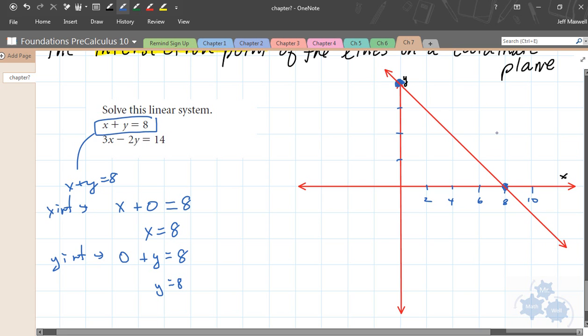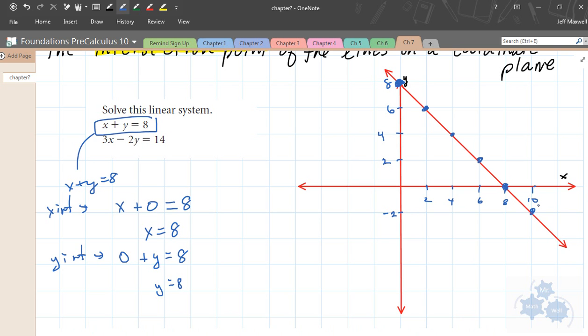So x plus y equals 8. Now let's check some other points on this graph, like for example, 2 and 6. Does 2 plus 6 give us 8? Yes. Does 4 plus 4 give us 8? Yes. Does 6 plus 2 give us 8? Yes. Does 10 plus negative 2 give us 8? Yeah. So you see how all the points of this line satisfy that equation. That's why we draw that line.